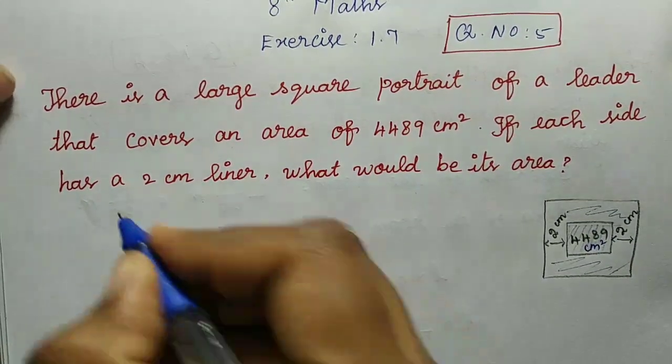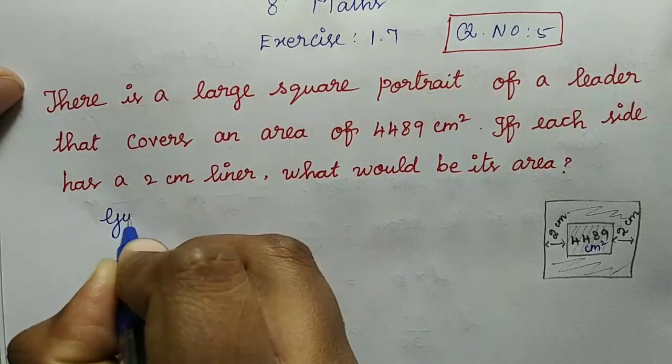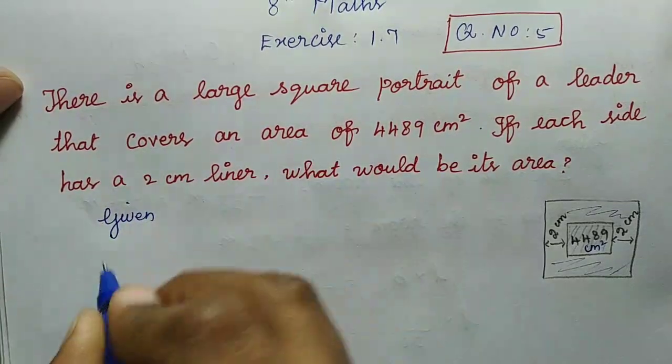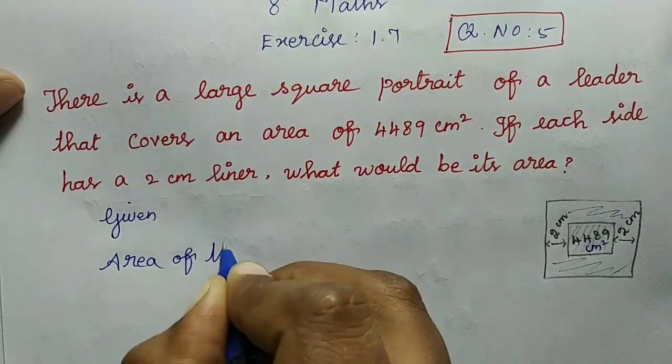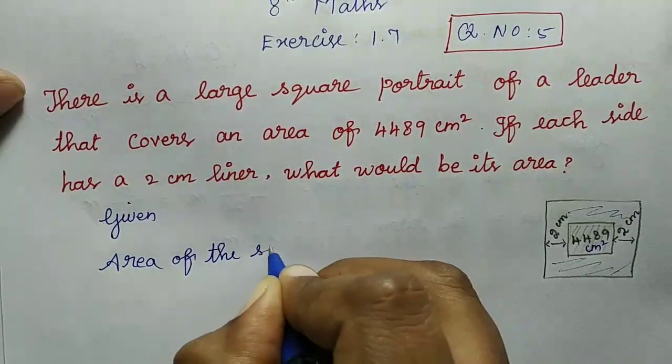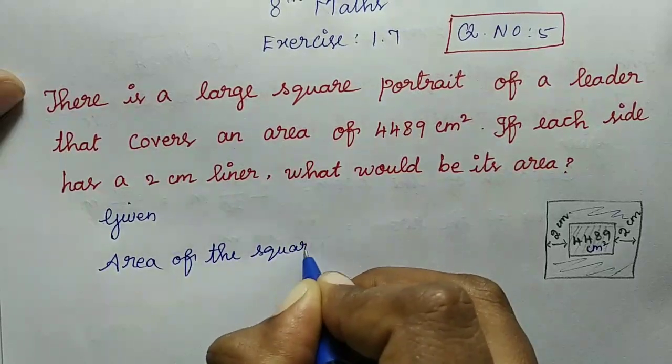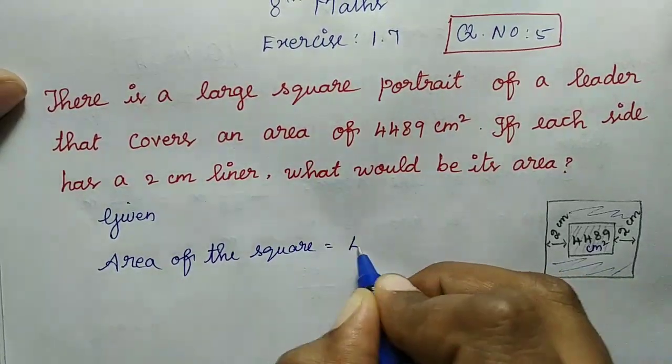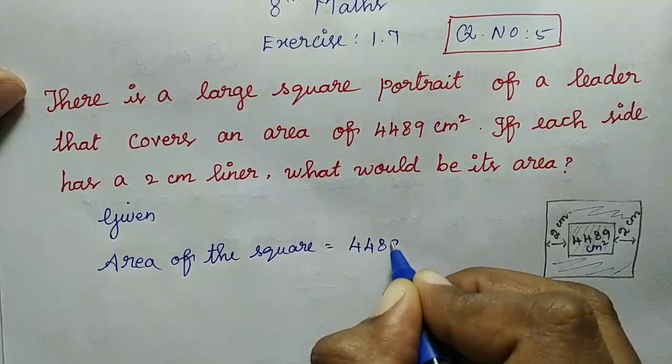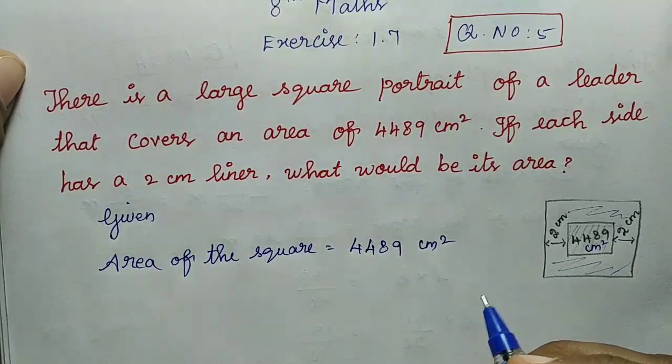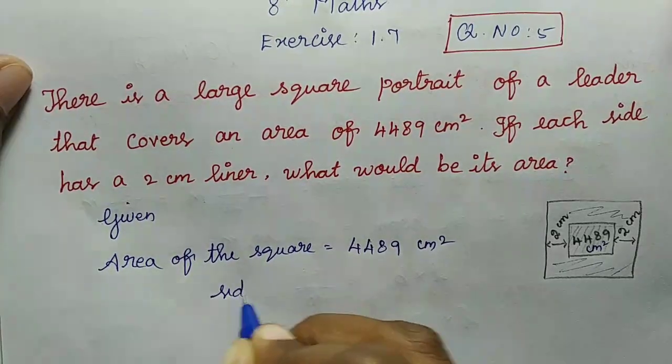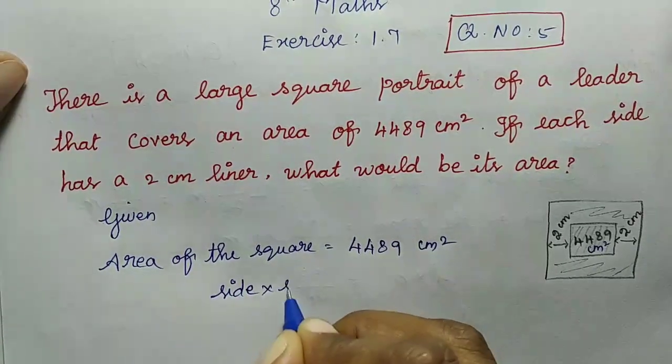Given values: area of the square is 4489 centimeters square. So area of the square, the formula is side into side.